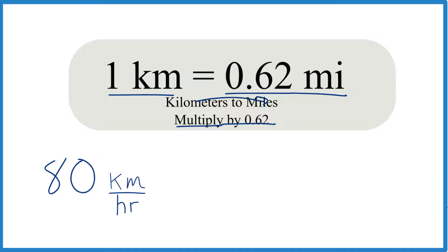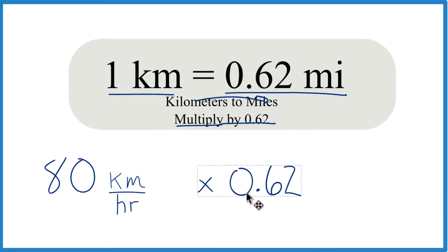If you need more decimal places, you could use 0.621371, and sometimes people just use 0.6 to make it easier. We multiply our 80 kilometers by 0.62.